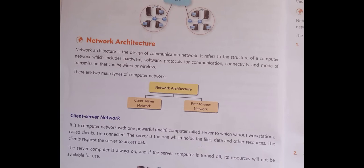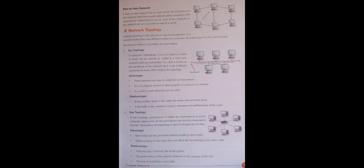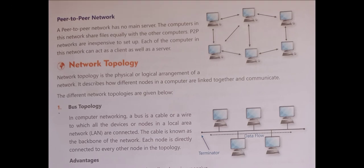There are two types of network architecture. First is client-server network — a network with one powerful main computer called the server. The rest of the computers connected to it are called clients. Second is peer-to-peer network — in this, all nodes are connected with each other. There is no main server; computers share files equally, and any node can exchange data with any other node.